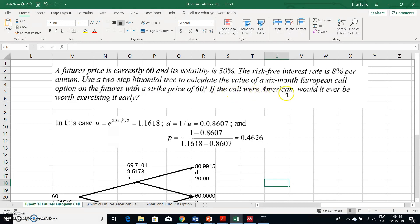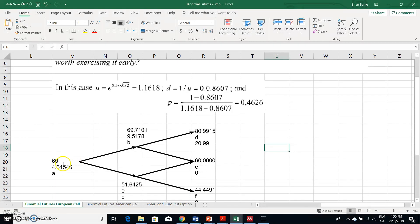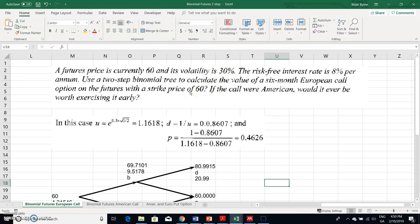If the call option were American, would it ever be worth exercising early? So with these parameter values, futures price 60, we're not specifically given u and d. We're not told the futures price will go from 60 to this value or 60 down here. Instead, we're given a volatility of 30%, which is equivalent to the Black-Scholes volatility, denoting the annualized standard deviation of the return.